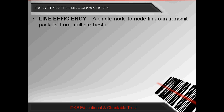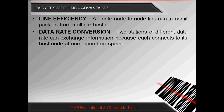Now we are going to see the advantages of Packet Switching compared to Circuit Switching. The first advantage is line efficiency: a single node-to-node link can transmit packets from multiple hosts, whereas in Circuit Switching a single dedicated line is established per transmission. Also, data rate conversion is possible in Packet Switching — two stations of different data rates can exchange information, as each connects to its packet switching node and the conversion is handled there. In Circuit Switching, both devices must transmit at the same speed since there are no intermediate routers to control data rates.